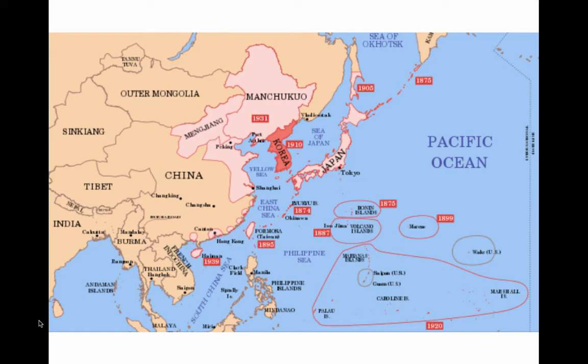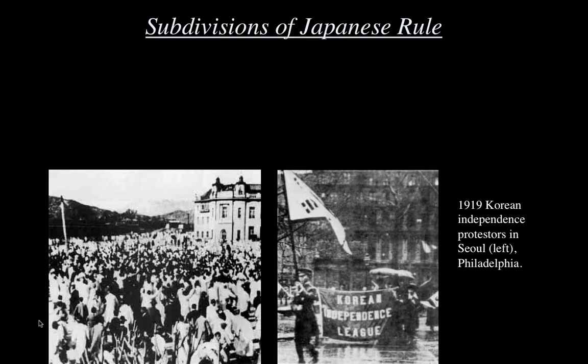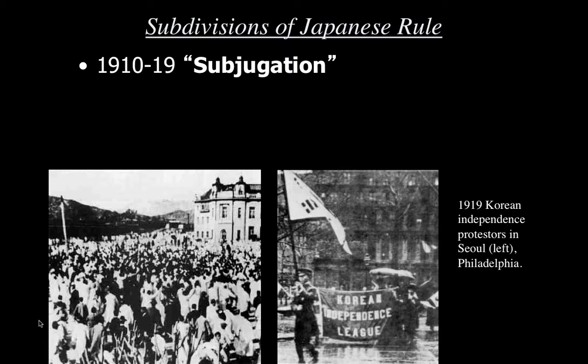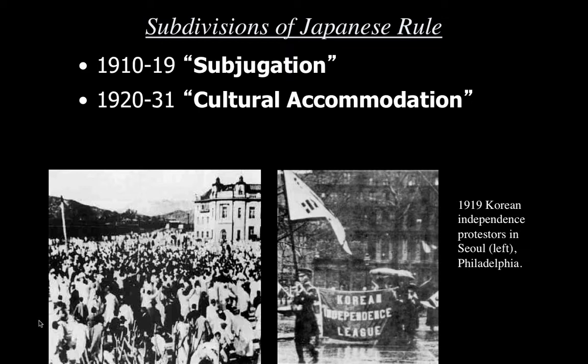By 1910, Korea had become the prize colony of Japan's colonial empire, shown on a map with dates at which different parts of East Asia were incorporated. We commonly divide Japanese rule into three sub-periods. The initial ten years or so are often referred to as the period of subjugation, involving arrests and suppression of guerrilla movements. This led to a protest in March 1919 called the March 1st Movement, which, though suppressed, led to a period of so-called cultural accommodation with greater freedoms. But from 1931 onward, as Japan became more involved in war on the Asian mainland, they became even more aggressive, entering the period of assimilation — and it is during that last period that most of our reading takes place.